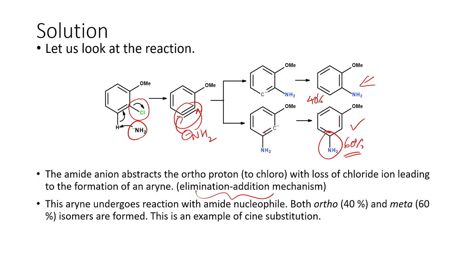This reaction proceeds via the aryne intermediate through an elimination-addition mechanism. In the first step, elimination of Cl⁻ takes place; in the second step, addition of NH2⁻ takes place. This reaction is called a sine substitution, where one nucleophilic unit in the aromatic ring is replaced by another nucleophilic unit, but the incoming nucleophile occupies a different position from where the original nucleophile left.